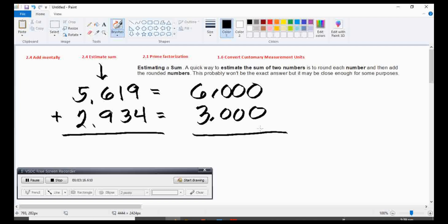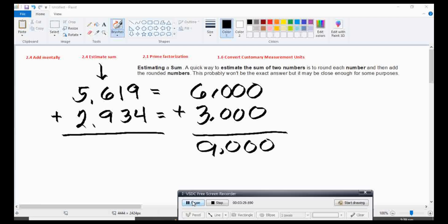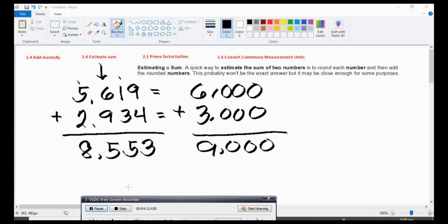And we are ready now to find the sum of the rounded numbers. So put down all the three zeros, the comma, and add 6 plus 3 and it will give you 9. Let us find the sum of the actual number: 9 plus 4 will be 13. Put 3 down and the tens up. 1 plus 1 will be 2. 2 plus 3 will be 5. 6 plus 9 is 15. Put the 5 down and the tens up. 1 plus 5 is 6. 6 plus 2 is 8. Look at the actual number and the rounded one. They are close to each other. So therefore, that is the estimated answer.